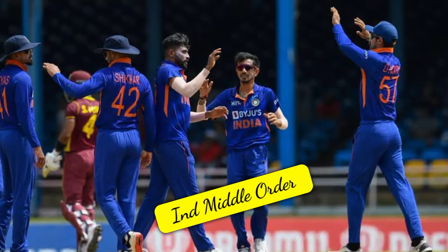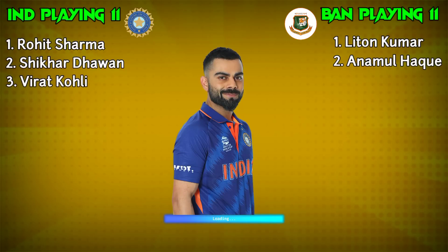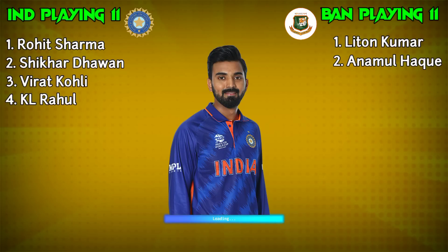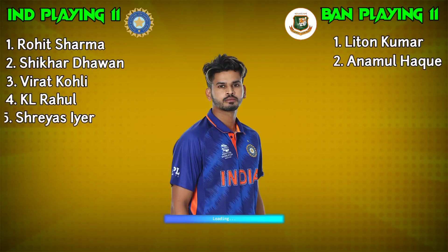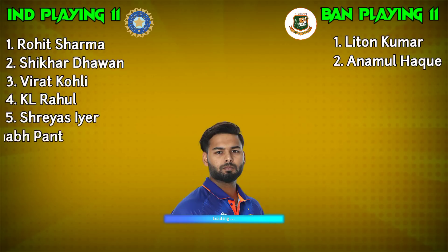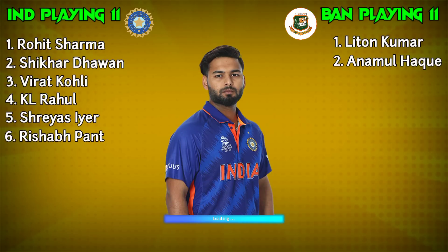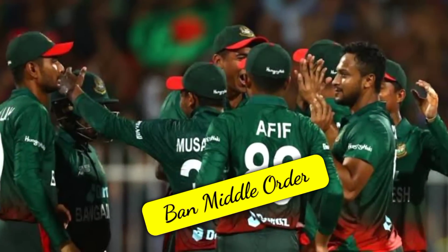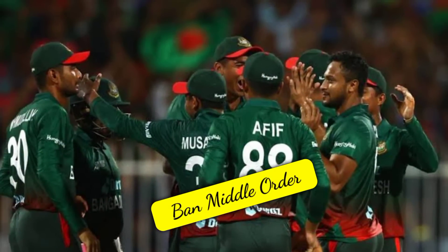India team middle order. Number 3: Virat Kohli, Right-handed Batsman. Number 4: KL Rahul, Right-handed Batsman. Number 5: Shreyas Iyer, Right-handed Batsman. Number 6: Rishabh Pant, Wicket-keeper Batsman. Number 7: Akshar Patel, All-rounder. Bangladesh team middle order: